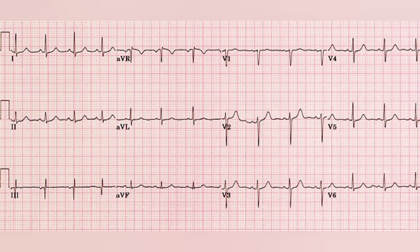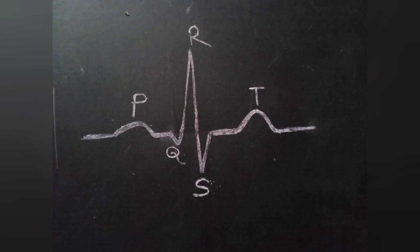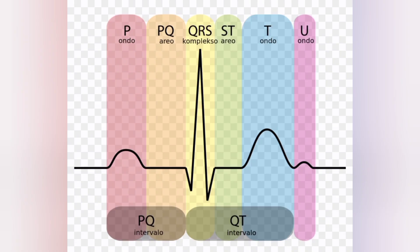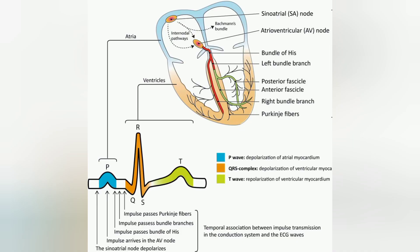A healthy human being produces this standard format of ECG. Any significant changes in this pattern indicate a problem in heart function. In the image, you can see the graph segmented into different sections: P, PQ, QRS, ST, T, and U. These different sections are made of electrical signals coming from different portions of the heart and represent depolarization and repolarization activity.